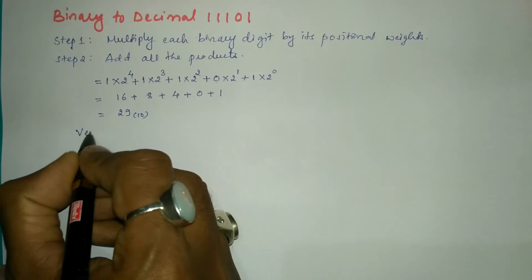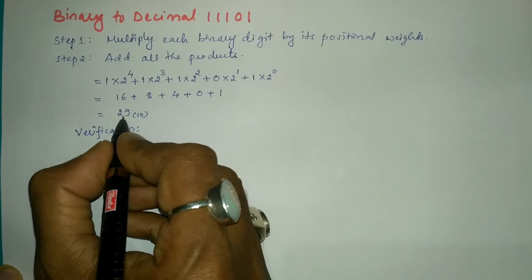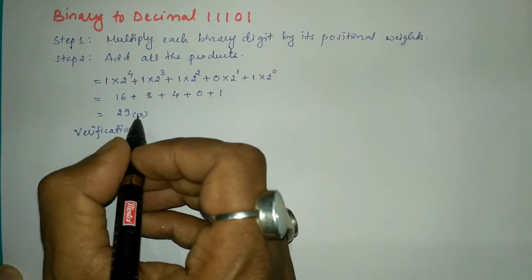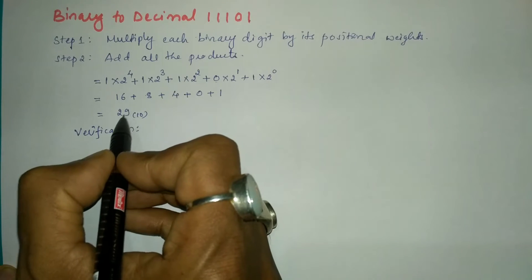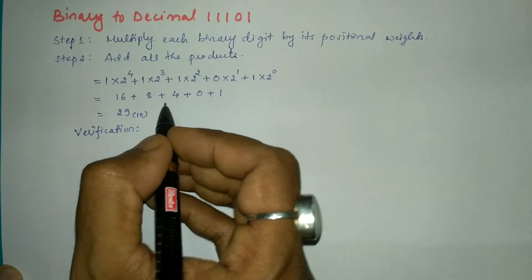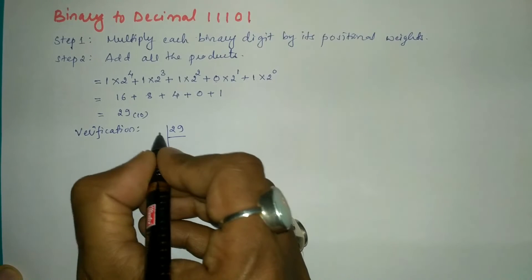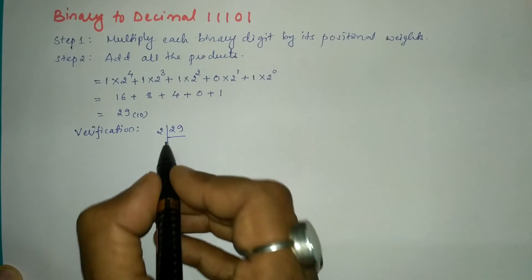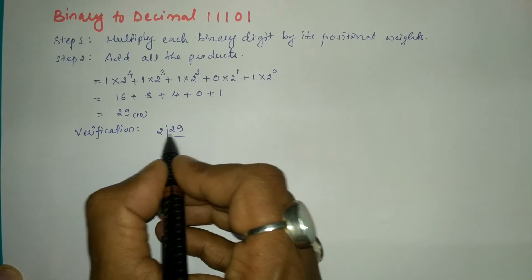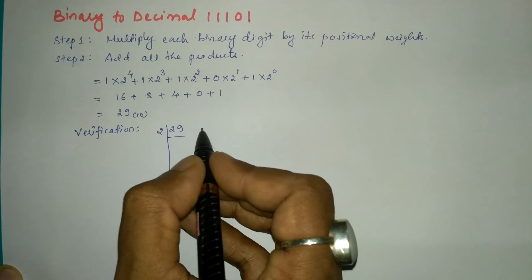So how do we do the verification? We will convert this decimal number once again into its binary equivalent. If we convert correctly, we must get the same sequence of bits. What we need to do is divide the decimal number 29 by 2, noting down both quotient and remainder, and keep dividing until the quotient becomes 0.